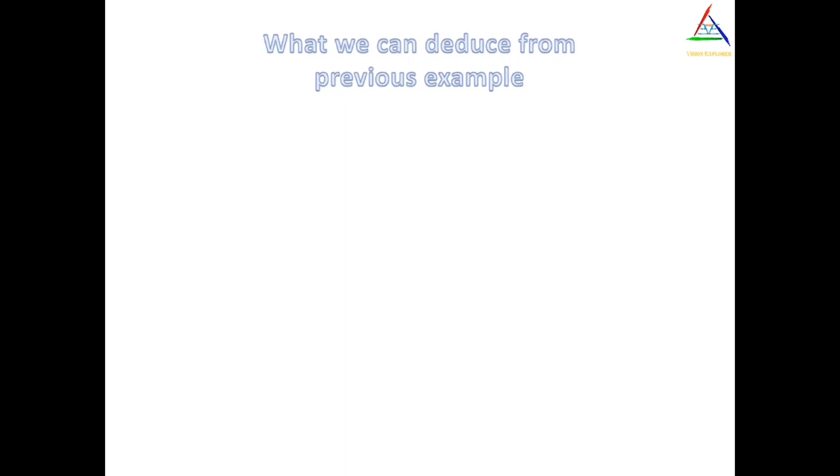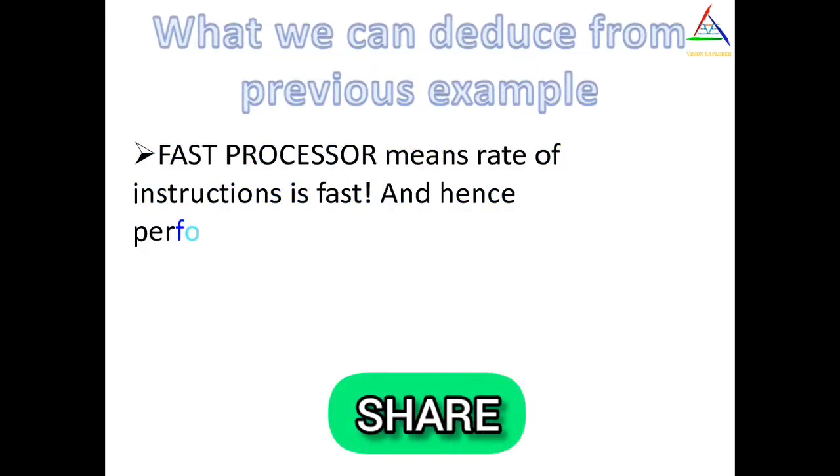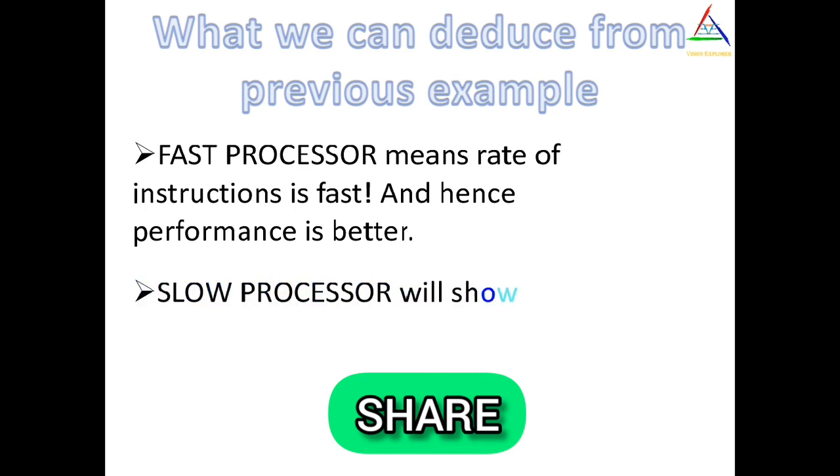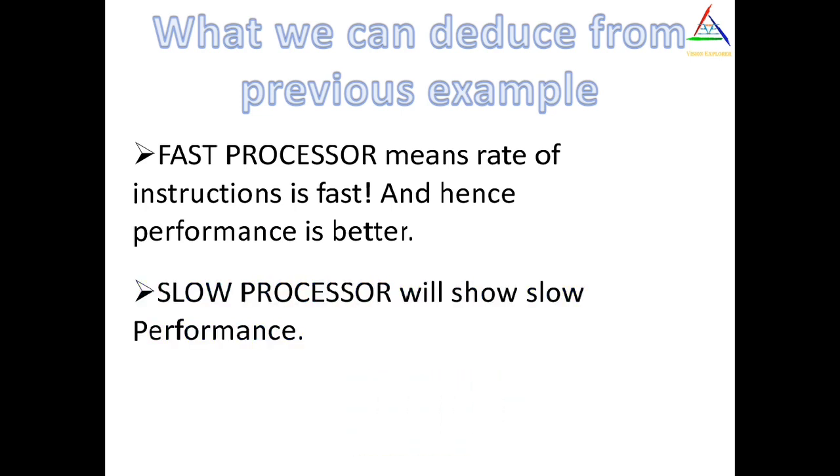From this you can deduce that the faster the processor is, the faster your computer will perform instructions or commands. And slower the processor, slower the commands, and hence the performance is slower.